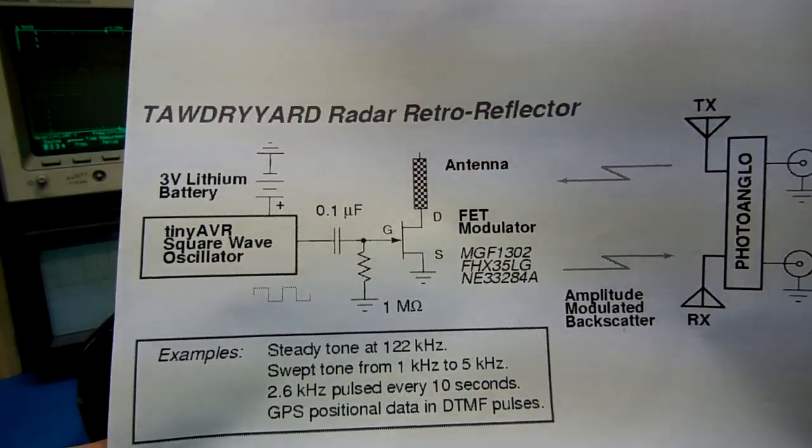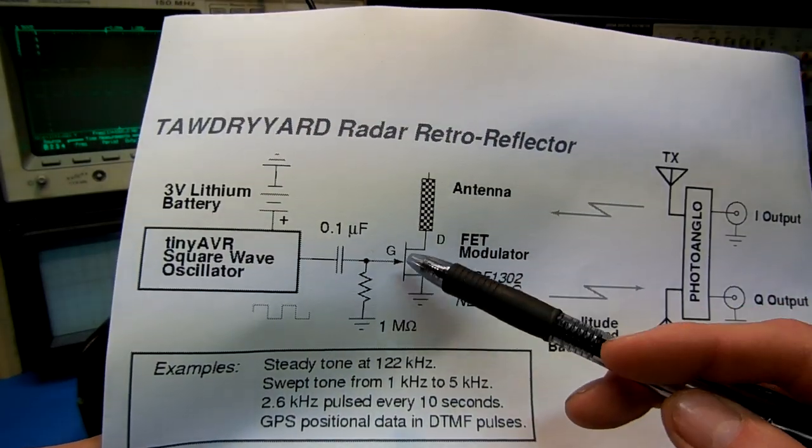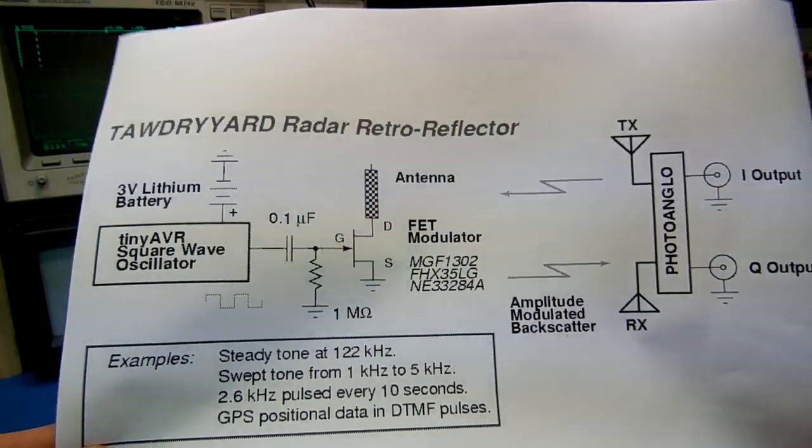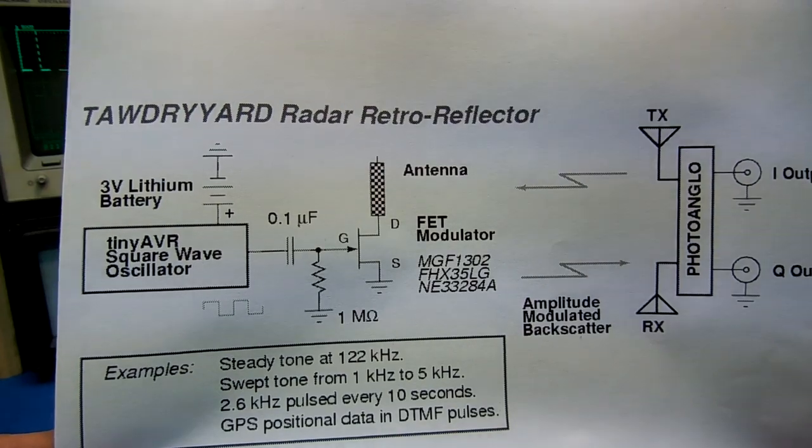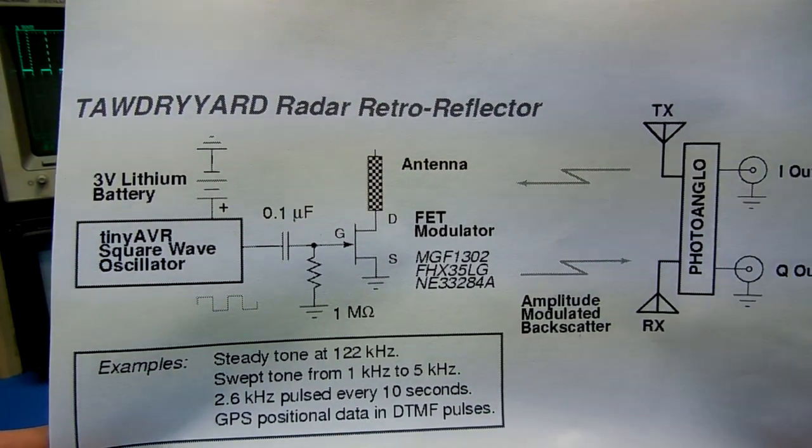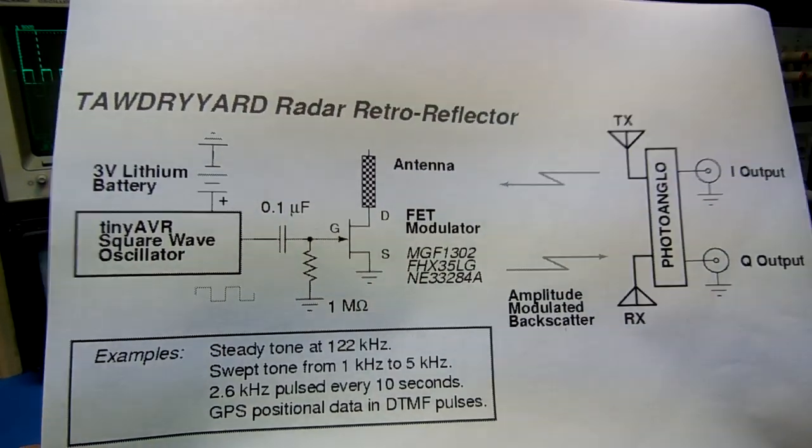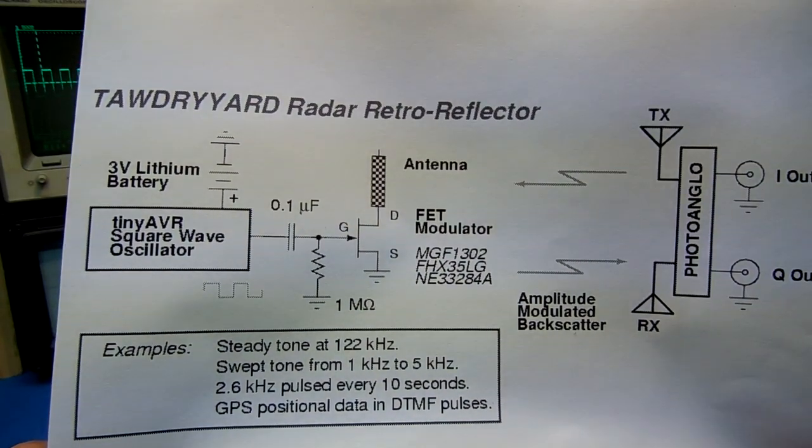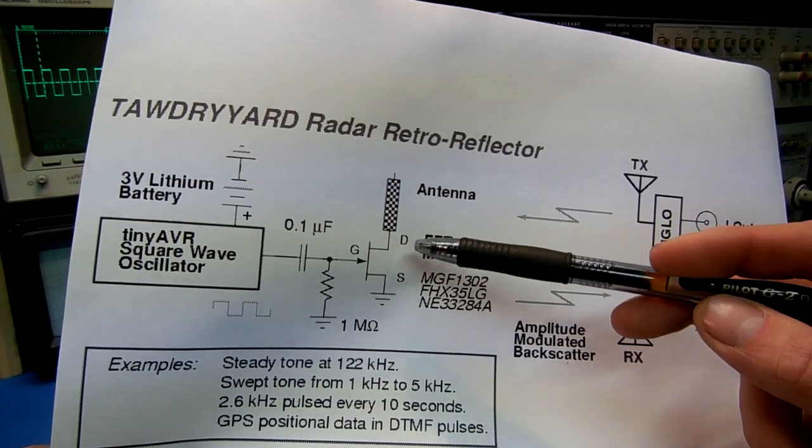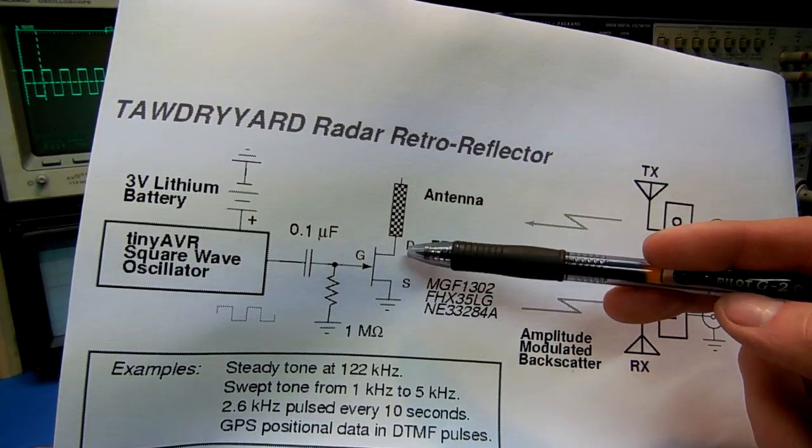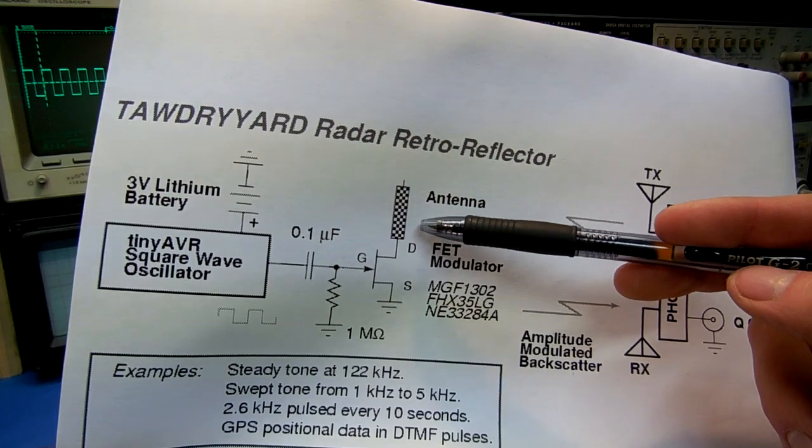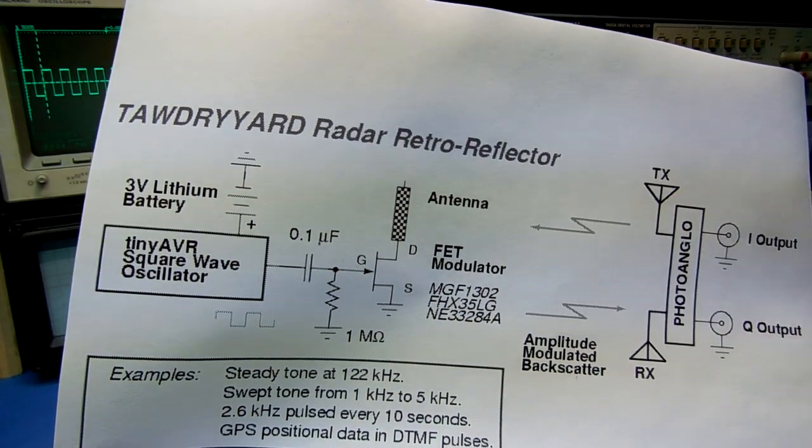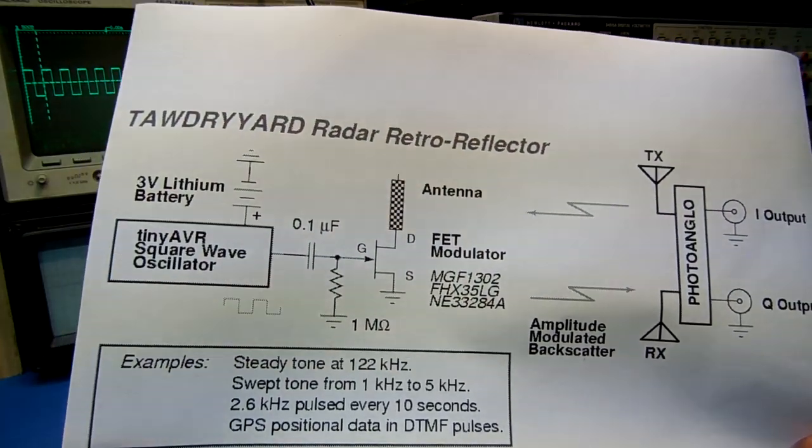The square wave is run straight into the gate of a FET, microwave FET. For our experiments here, I'm going to be using the Fujitsu FHX35LG. But pretty much any quality microwave FET will work. On the drain of the FET is an antenna. For the ideal response it should be a quarter wave of the illumination carrier, remote illumination carrier. But in reality just about any piece of wire will work.